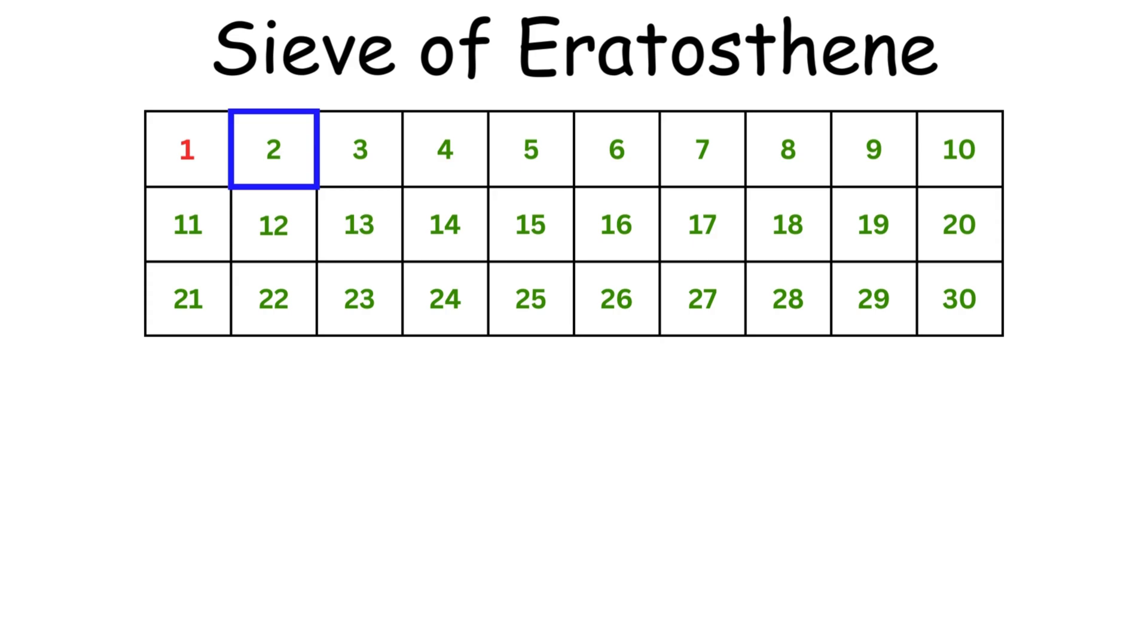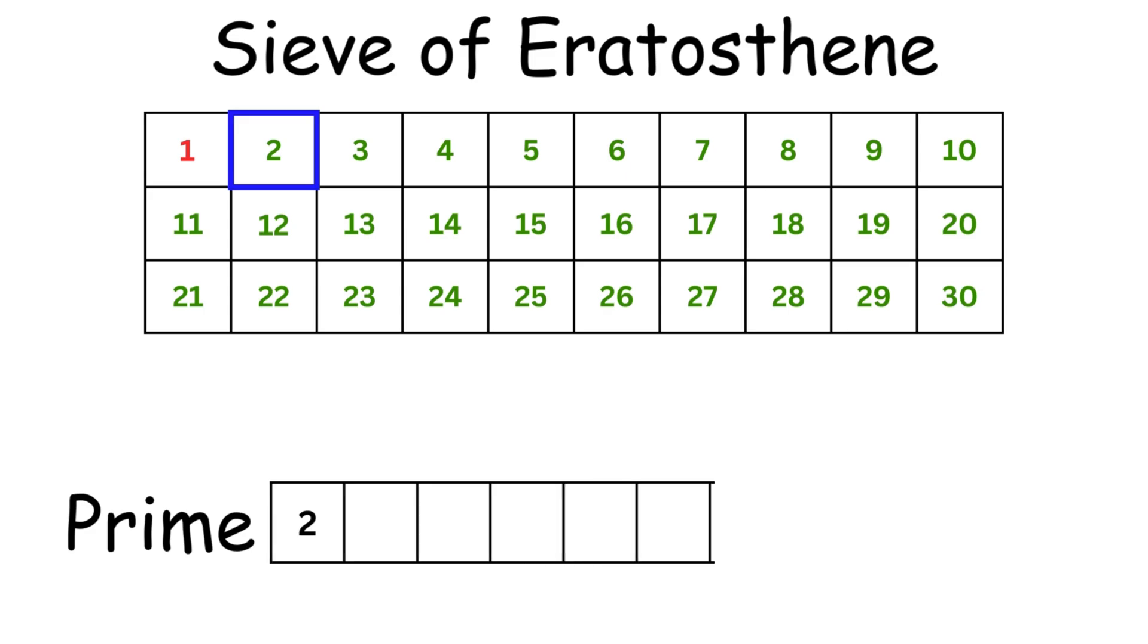Alright, now the algorithm looks through the array starting from one. If the element is true, it will be added to the primelist.